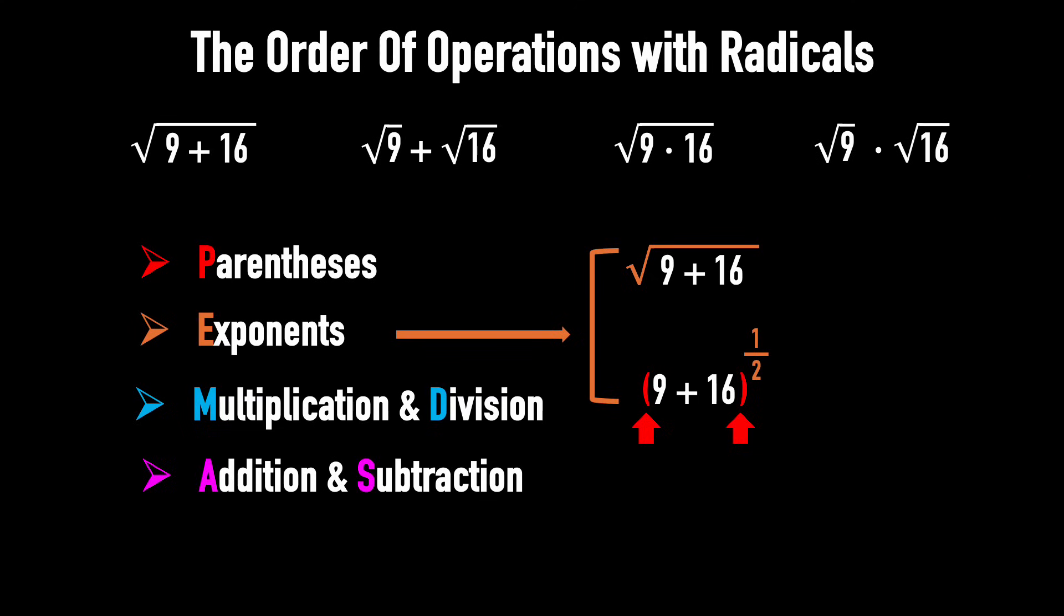That means the radical sign implies parentheses around the radicand, even though they're usually not shown. So, first, parentheses. 9 plus 16 equals 25. Second, the square root of 25 is 5.